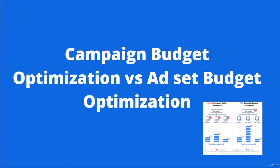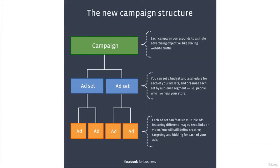Advertisers who run multiple ad sets or multiple campaigns have two options to structure and optimize their campaigns: number one is ad set budget optimization, and number two is campaign budget optimization. Before understanding the concept, let's take a look at the Facebook campaign structure.